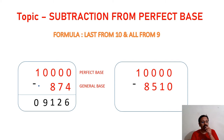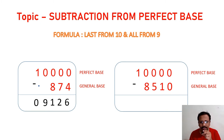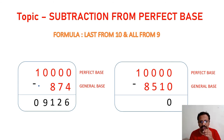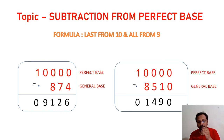One more: 10,000 minus 8510. Here the unit place of both numbers is 0, so 0 minus 0 — keep 0 as it is. Our formula starts from 1: complementary of 1 using base 10 is 9, complementary of 5 using base 9 is 4, complementary of 8 is 1, and 1 minus 1 is 0.